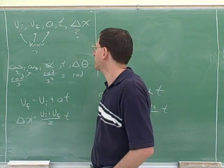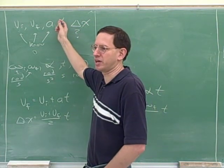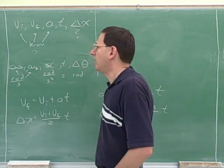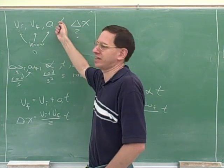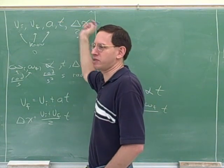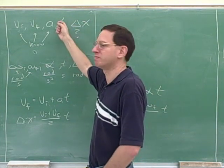It would be a waste of time to pick an equation that has time in it, for example here, because we don't care about that variable. The quickest way to pick out the right equation then is to pick the equation that is missing time. That's faster than checking whether it has all four of the variables. Pick the one that's missing the time.